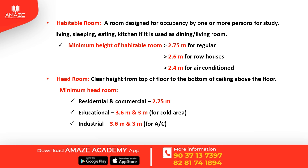For educational buildings, the minimum headroom is 3.6 meters. For cold areas, it is 3 meters, which applies to industrial buildings. The minimum headroom for industrial buildings is 3.6 meters, and for AC areas, it is 3 meters.